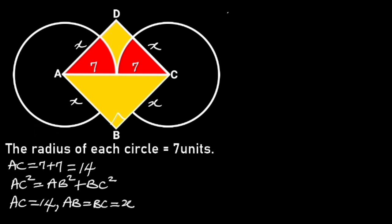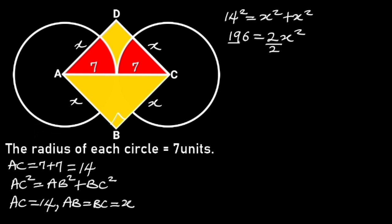Substituting these values in the formula, we will have 14 squared is equal to X squared plus X squared. Simplifying this will give us 196 is equal to 2X squared. Next, let's divide through by 2. 2 will cancel out 2, and 196 divided by 2 is 98. So we are left with X squared is equal to 98.